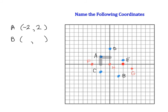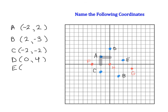For coordinate B, I go right two, down three — so that's (2, -3). For coordinate C, I go left two, down two — so it's (-2, -2). For coordinate D, I don't move left or right so my x value is zero, but I move up four — so it's (0, 4). For coordinate E, I move right three, up one — so it's (3, 1). Please pause the video and see if you can name the last three coordinates.